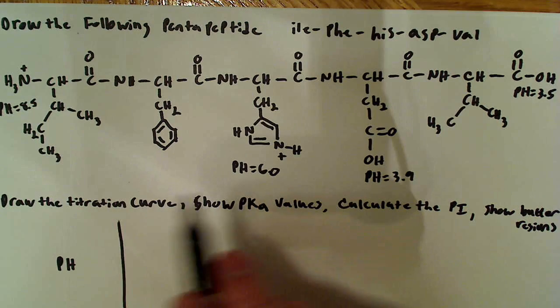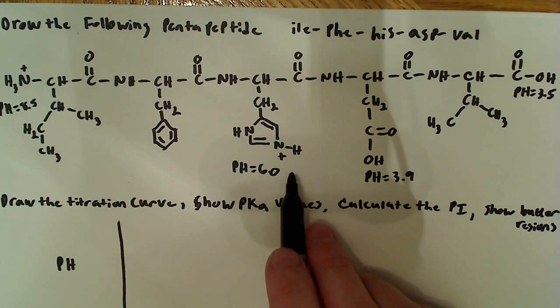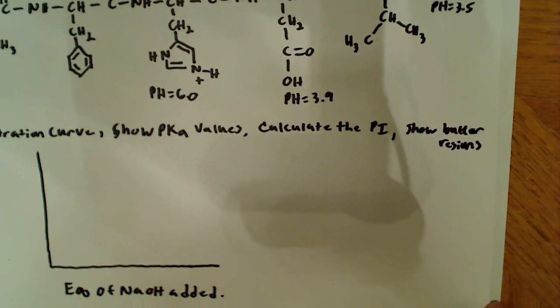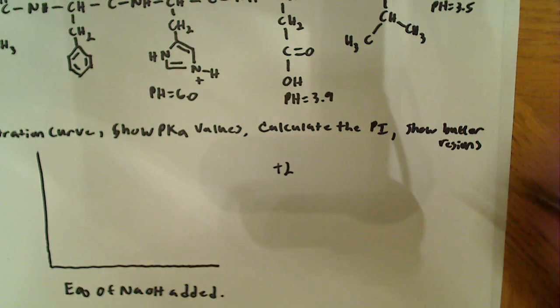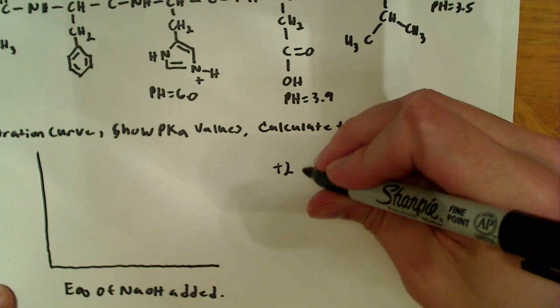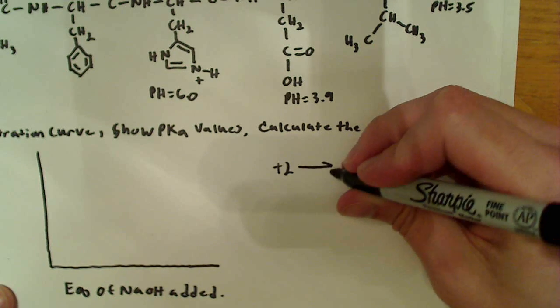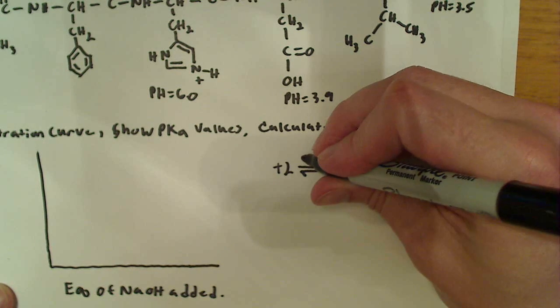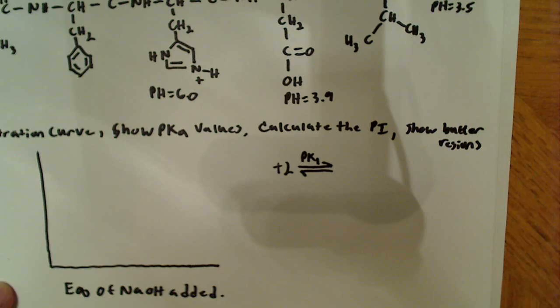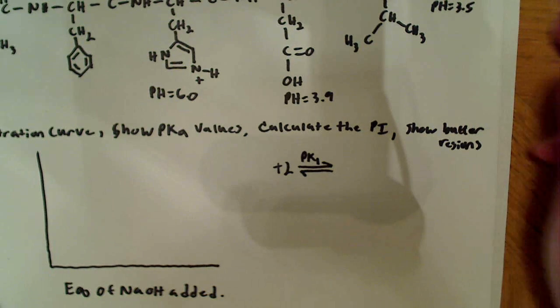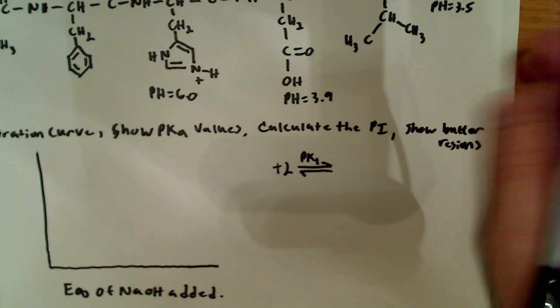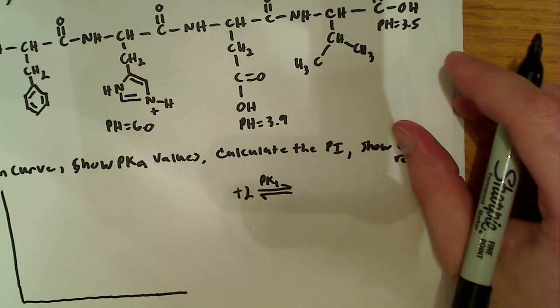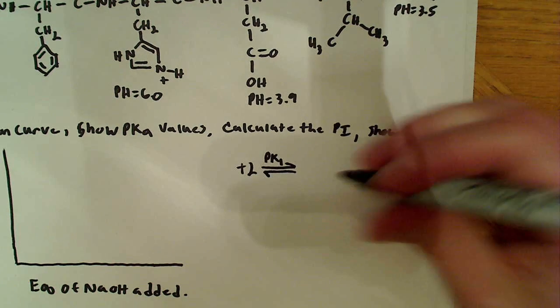So let's just look at that for a second. We've got a positive 1 over here, we've got a positive 2 over here. So we've got a plus 2 overall charge. So what I like to do then is I like to say, okay, we're starting at plus 2. Now once I go over here and I add enough equivalents of NaOH, then I'm going to cross pK1. And pK1 is basically the proton that's going to be lost first. So that's going to be the OH on the end over here. That's going to be the first one to go, and that's going to bring us to a plus 1 charge.